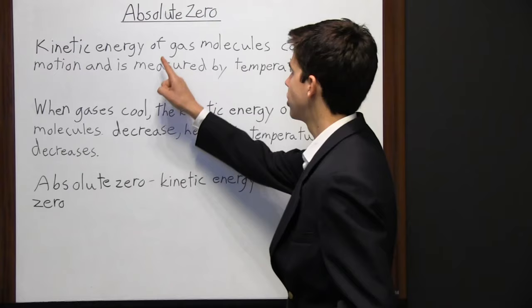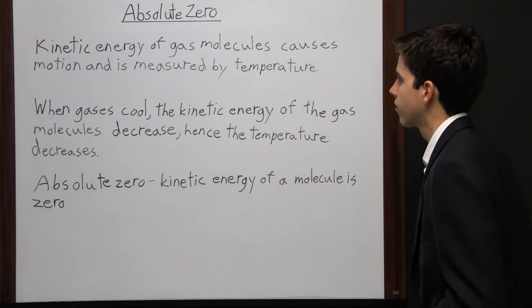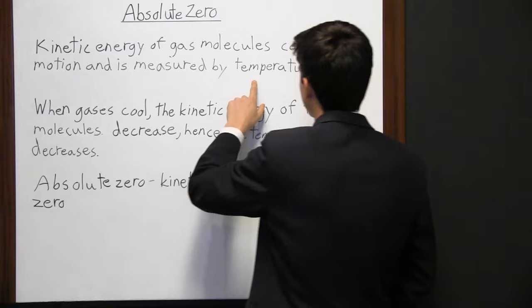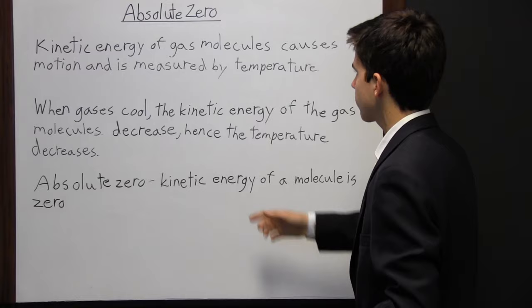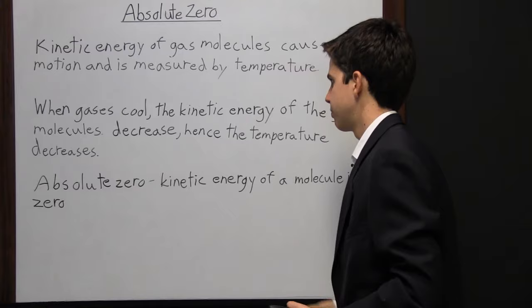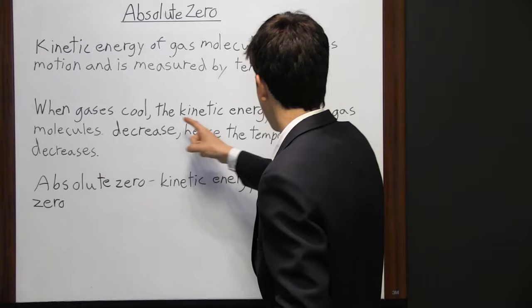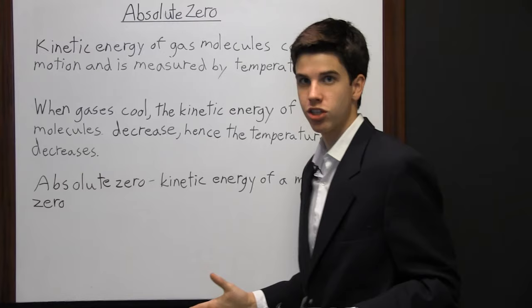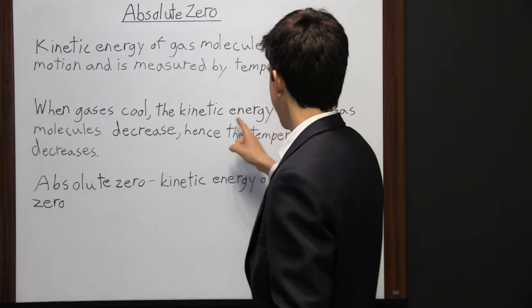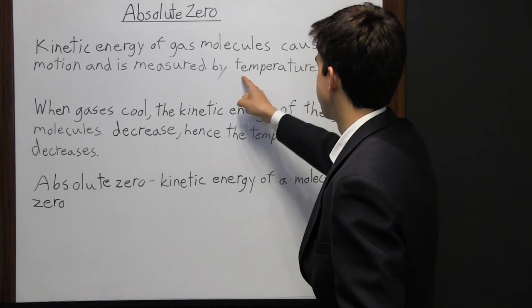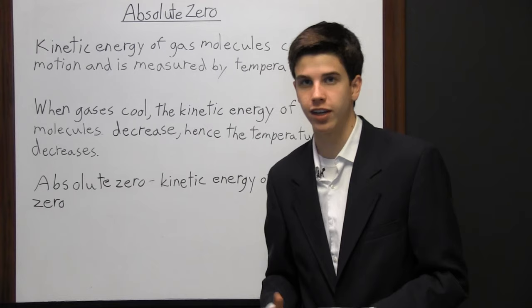Absolute zero is zero degrees Kelvin. Kinetic energy of gas molecules causes motion, which is measured by temperature. When gas cools, the kinetic energy of the molecules decreases, so motion decreases and temperature decreases. If you keep reducing molecular motion, eventually the molecules stop moving entirely — and since temperature measures motion, that point would be zero degrees, which is absolute zero.